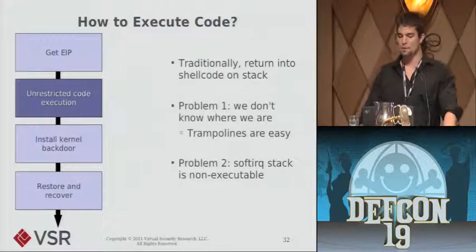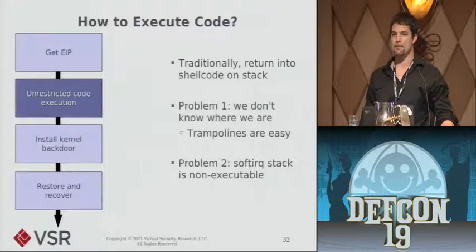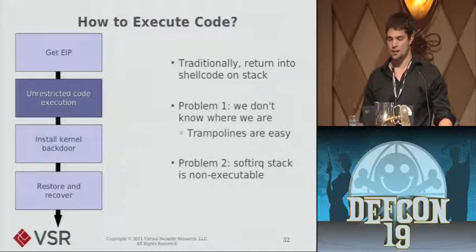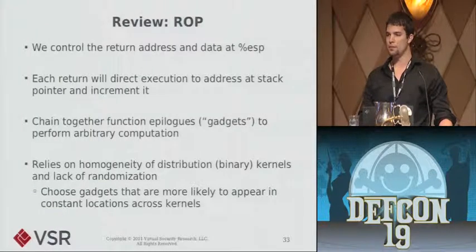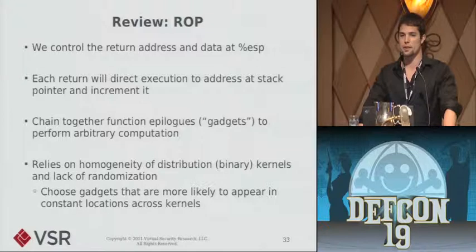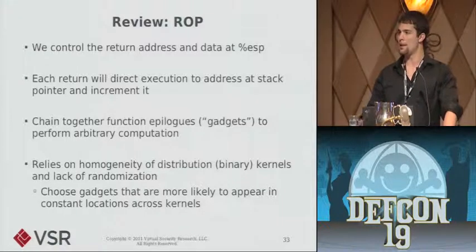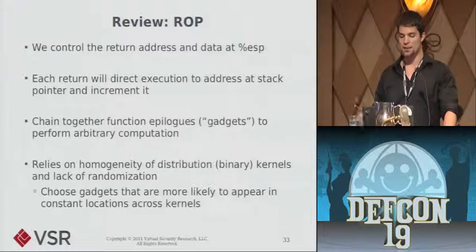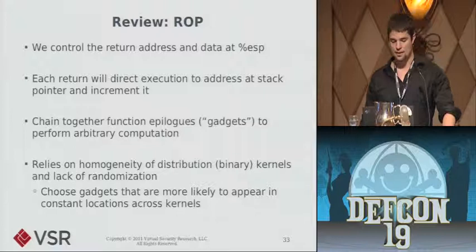That's pretty easily solvable — you return to a trampoline function that does a JMP ESP and jumps into the stack wherever it is. The second problem is that since we're running a PAE kernel, the soft IRQ stack on which we caused our overflow is non-executable memory. If we try to return there, the kernel will just crash. This means we need to employ return-oriented programming. The basic idea is: because we caused a stack overflow we now control the return address, and we control a bunch of data on the stack past that saved return address. We also notice that every return instruction directs execution to the address on the stack and then increments the stack pointer to the next place. Using this we can chain together little pieces of code at known locations in the kernel to do essentially arbitrary computation.